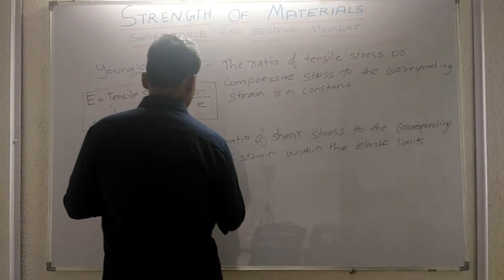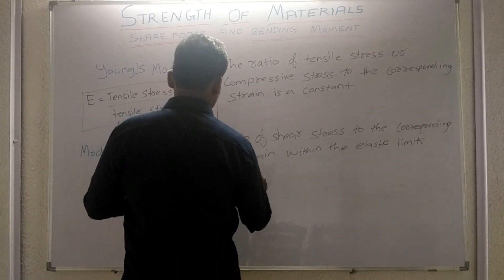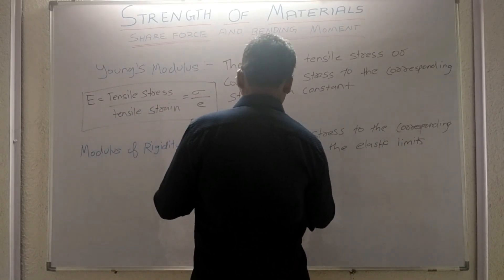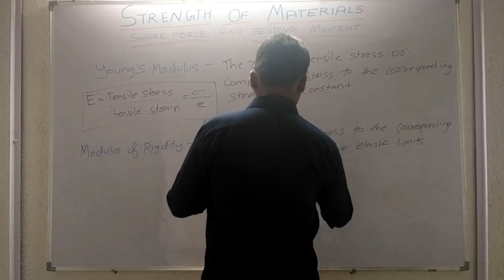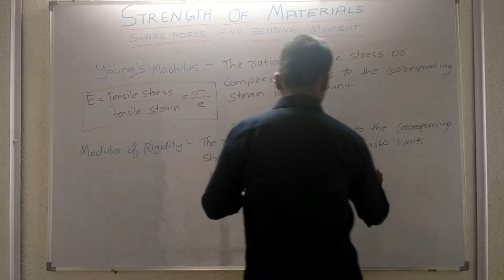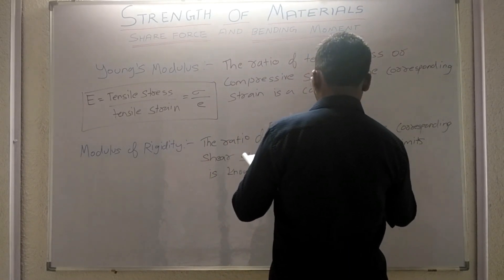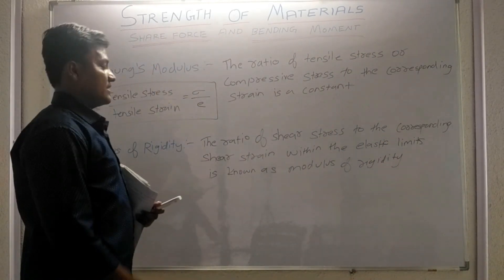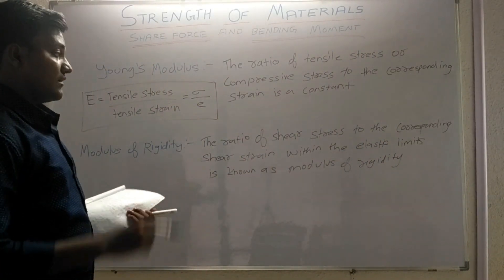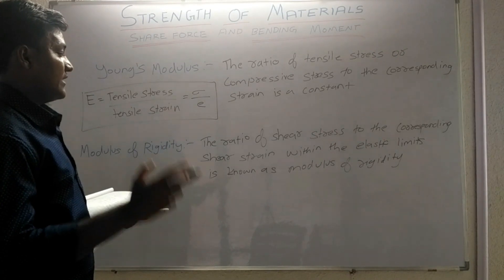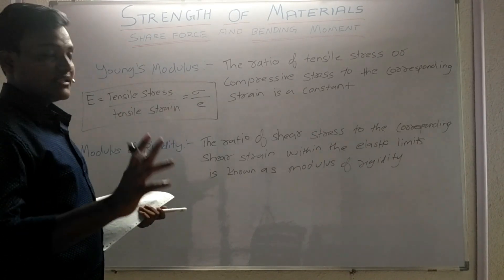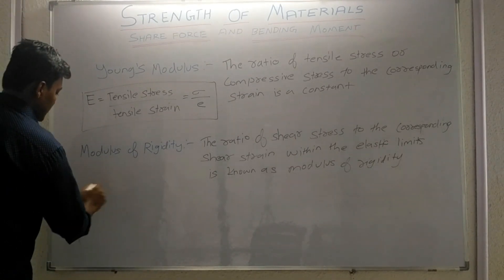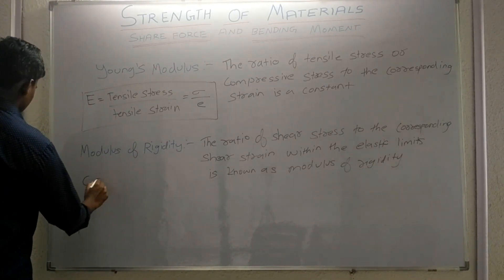It's known as Young's Modulus of Rigidity. The ratio of shear stress to the corresponding shear strain within the elastic limit is known as Modulus of Rigidity. Modulus of Rigidity is denoted by capital C.